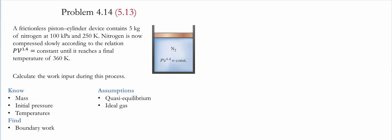A frictionless piston-cylinder device contains 5 kilograms of nitrogen at 100 kilopascals and 250 Kelvin. Nitrogen is now compressed slowly according to the relationship PV^1.4 equals a constant, until it reaches a final temperature of 360 Kelvin.